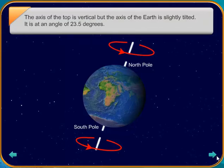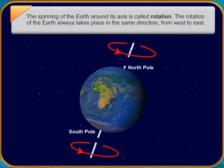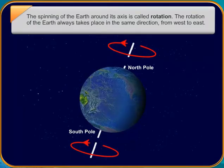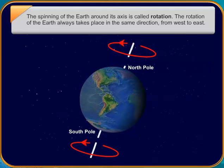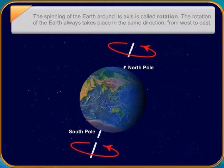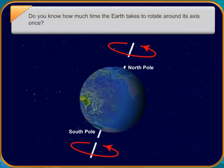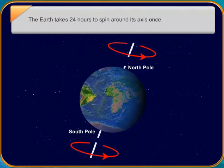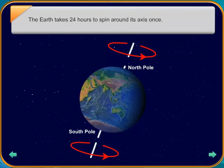Look at this ball. The side of the ball facing the torch receives light, while the opposite side remains dark. While the Earth rotates around its axis, only half of its surface faces the Sun. The portion that faces the Sun receives light and experiences day, and the portion in darkness experiences night.